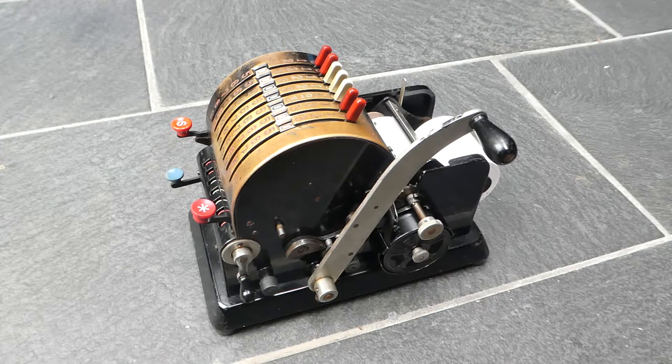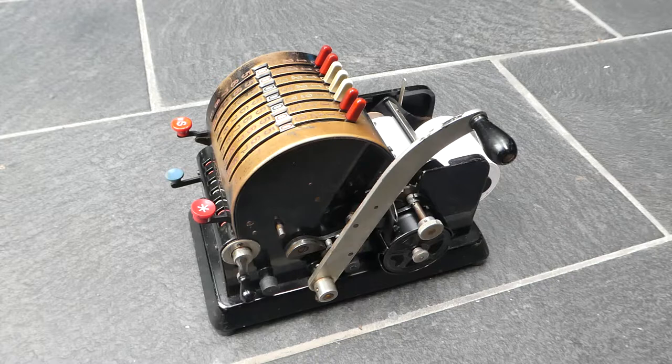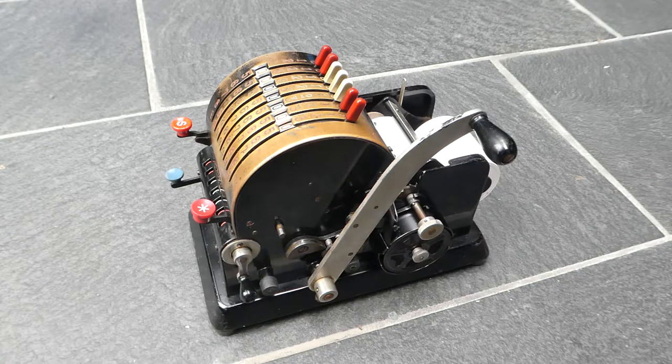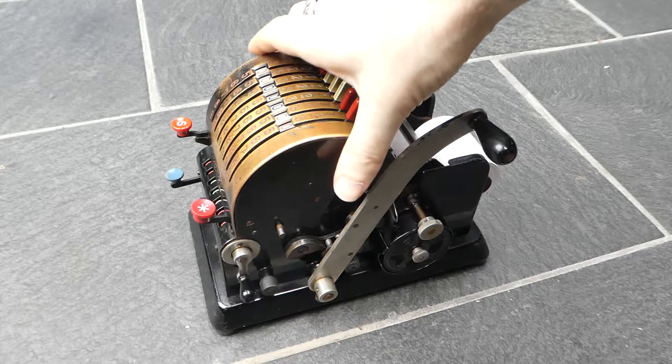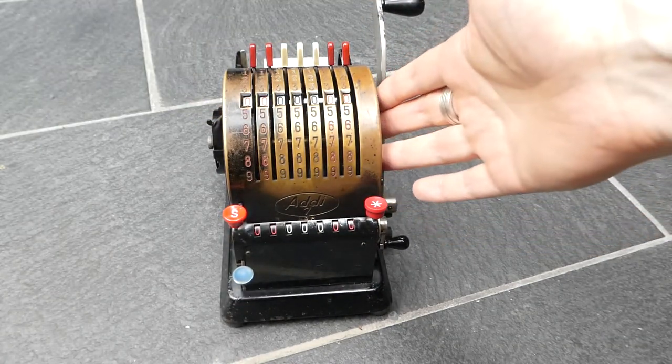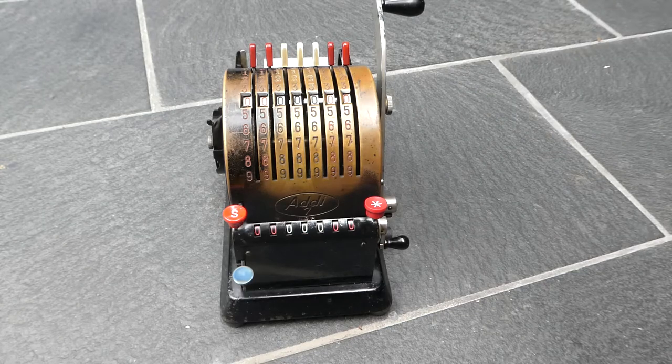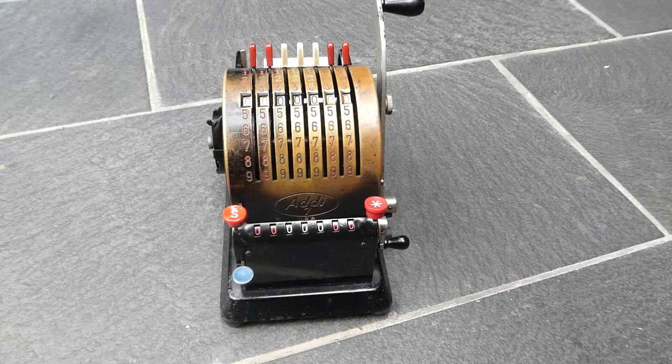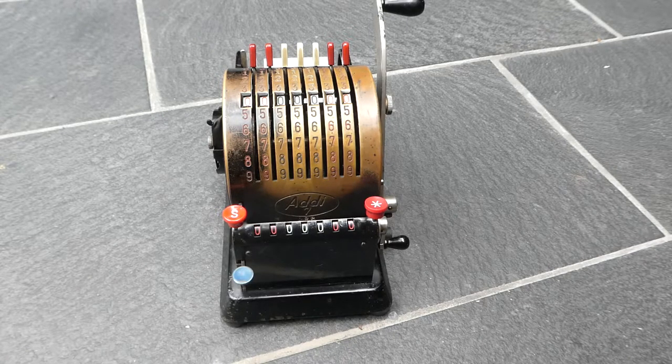So Otto Holzapfel made pinwheel machines and in 1928 he also made a small simple adding machine called the Lipsi Adi. In 1930 that was replaced by the Adi 7. After the Second World War, Lipsia or Leipzig is in East Germany. So eventually the East German state took over Lipsia and Triumpheta and merged them together and the Adi 7 was replaced by the Triumpheta Ka. I have a video showing the Triumpheta Ka elsewhere.